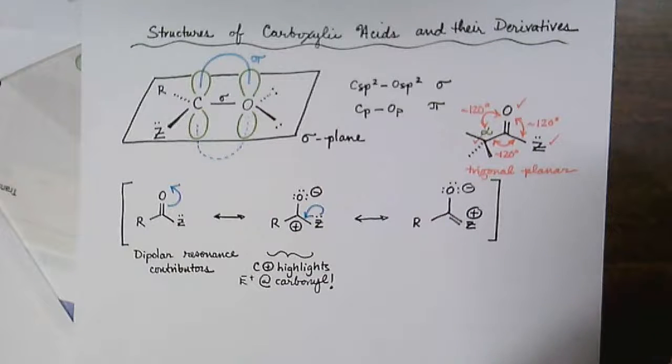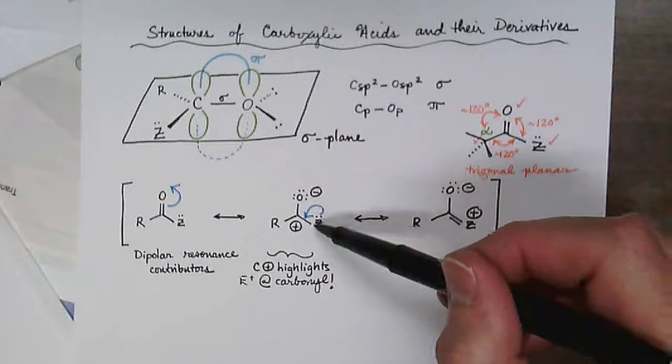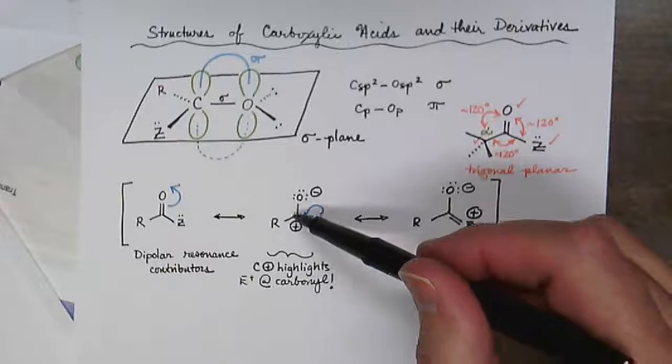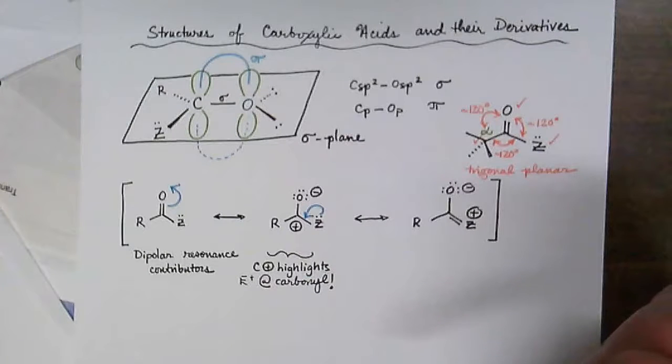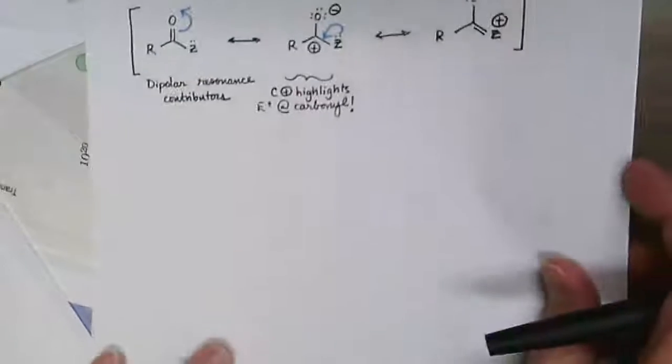for carboxylic acids and their derivatives. Typically we limit this to amides, esters, and acids. Generally we do not speak of acid halides having resonance structures where Z equals chlorine—the overlap between the 3p orbital and the 2p orbital of the carbonyl carbon is rather weak. So if we were to draw the resonance